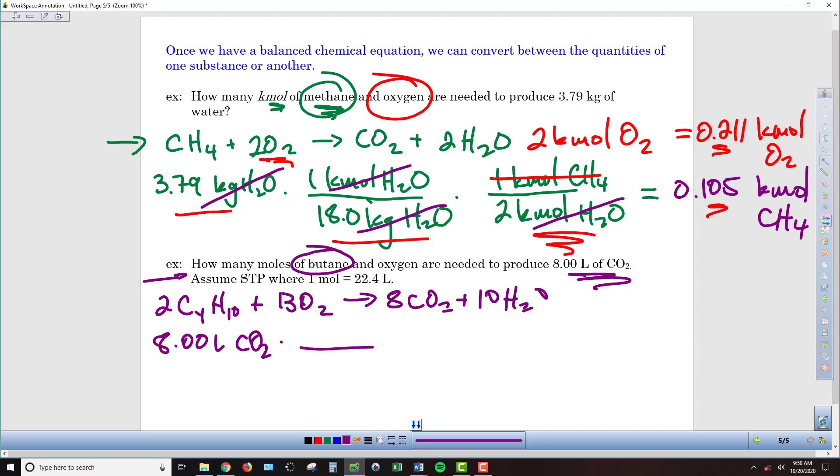I'm going to convert that to moles. So 22.4 liters of CO2 is the equivalent of 1 mole of CO2. And now I need to convert that number of moles of CO2 to butane using my stoichiometric equation.